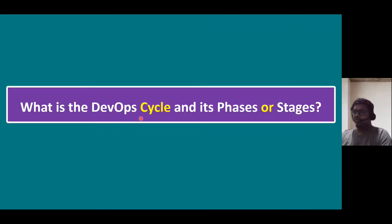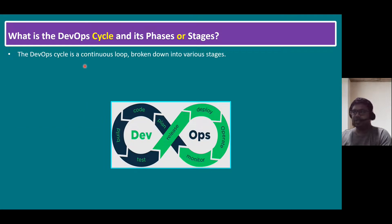What is the DevOps cycle and its phases or stages? The DevOps cycle is a continuous loop broken into various stages. As you can see, the development team has some stages and the operations team also has some stages. Minimally, the development team has four stages and the operations team also has four stages.